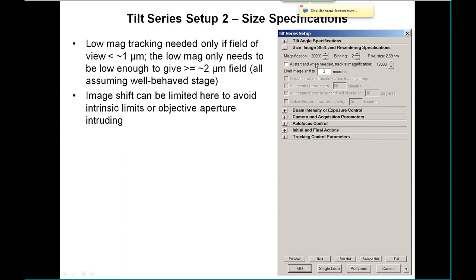The low mag tracking option is not needed very often. It's needed if the field of view you're working with is less than about a micron, where tracking is not very good as you go from one tilt to another. The low mag you specify here only needs to be low enough to give about two microns or more of image view. This all assumes a well-behaved stage — with a very poorly behaved stage, this could become a tool even at normal magnifications, but typically it's used for higher magnifications.